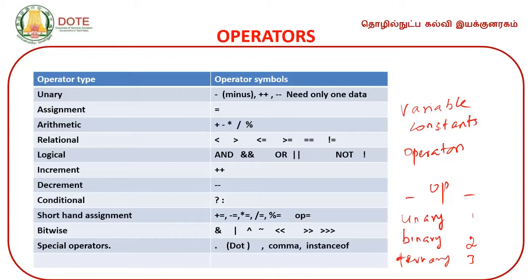The function types include arithmetic operations, comparison or relational operations, and logical operations. Unary operators include unary minus, increment, and decrement operators. Assignment uses a single equal sign. Arithmetic operators perform numeric operations. Relational operators compare values of the same type — greater than, smaller than, etc.